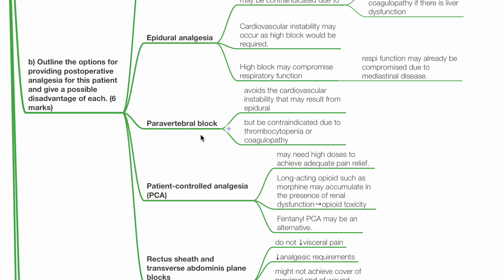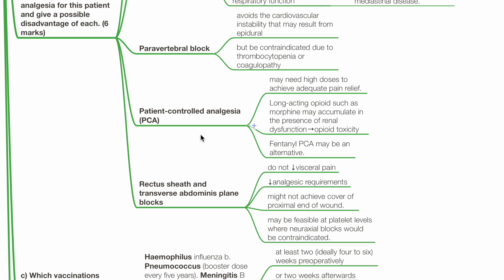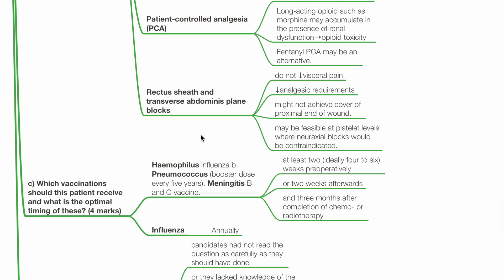Paravertebral block avoids cardiovascular instability associated with epidural but may also be contraindicated due to thrombocytopenia or coagulopathy. Patient-controlled analgesia may require high doses for adequate pain relief; long-acting opioids such as morphine may accumulate in renal dysfunction, leading to opioid toxicity — fentanyl PCA may be a more suitable alternative. Rectus sheath and transverse abdominis plane blocks do not reduce visceral pain but reduce analgesic requirements overall; they may not achieve adequate cover for the proximal wound, but may be feasible when low platelet counts contraindicate neuraxial blocks.